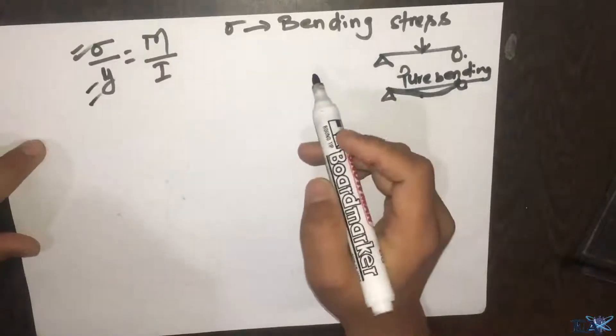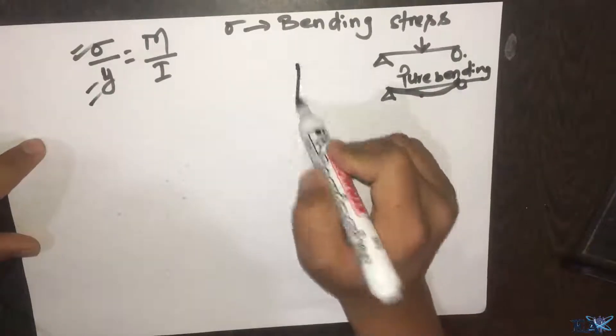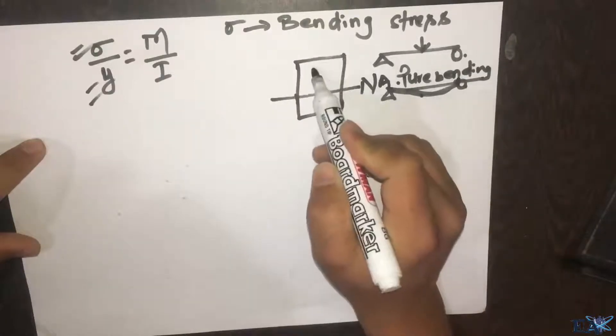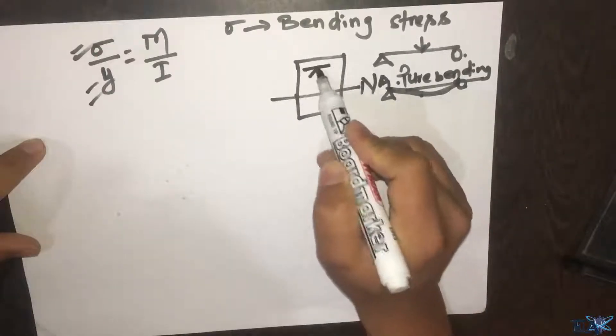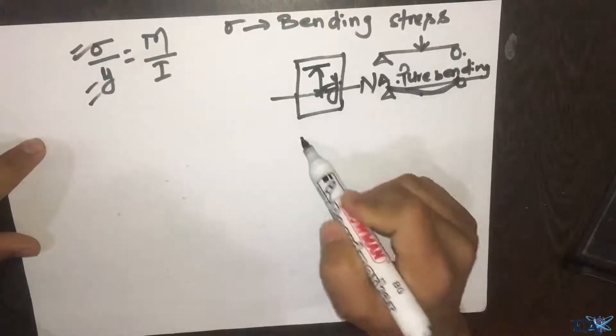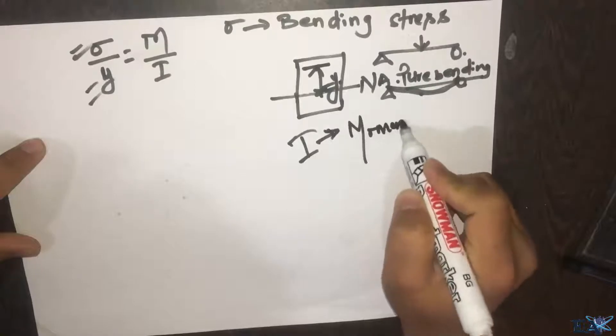For example, if this is your beam section and this is your neutral axis, suppose you're considering any point over here - this distance is called Y. And I, we know, is the moment of inertia.